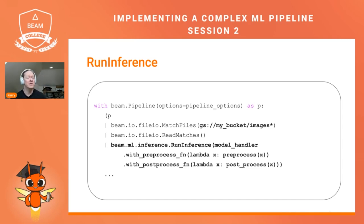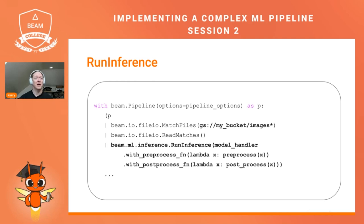As a brief review, RunInference is the transform we'll be using for all of our examples and in the pipeline that we build later in this session. The RunInference transform takes as its main argument a ModelHandler that says how to load and how to do inference with a given model, usually for a given framework. That ModelHandler can have pre and post-processing functions attached, and there can also be error handling and other arguments.